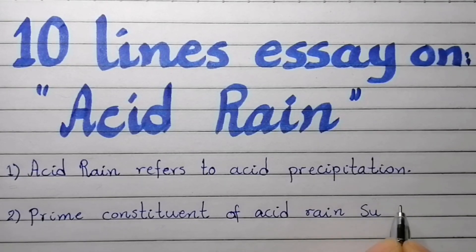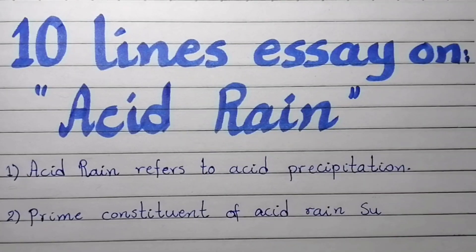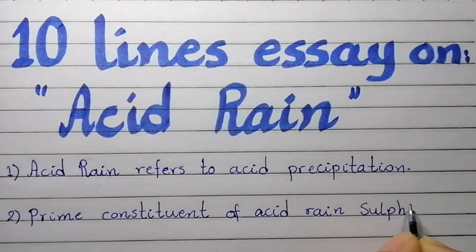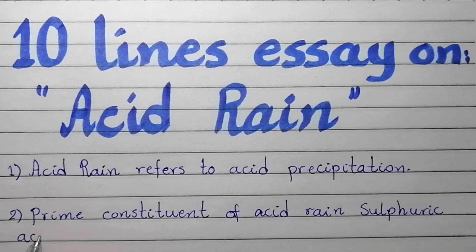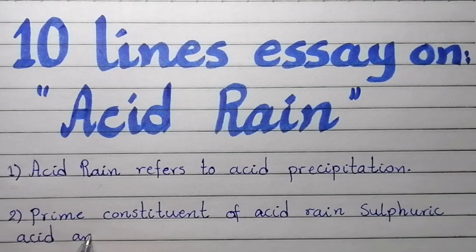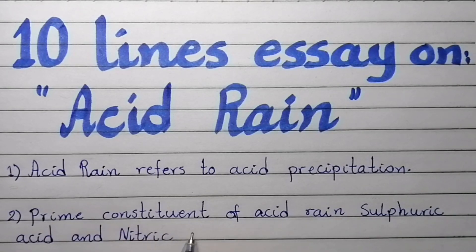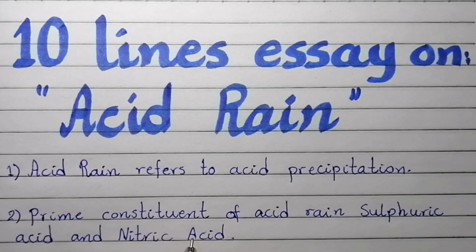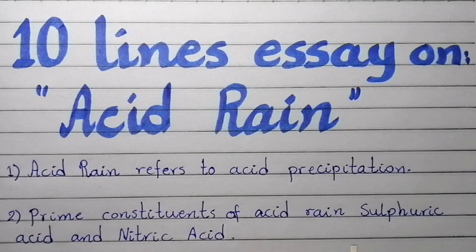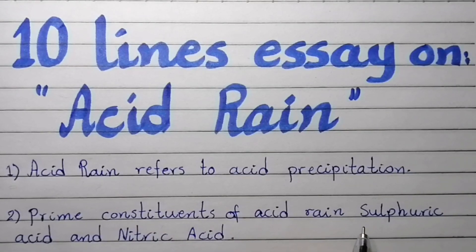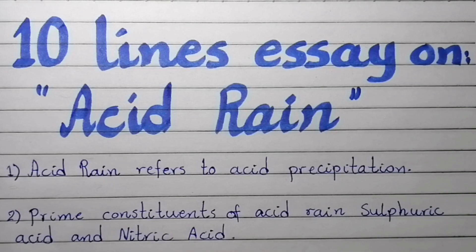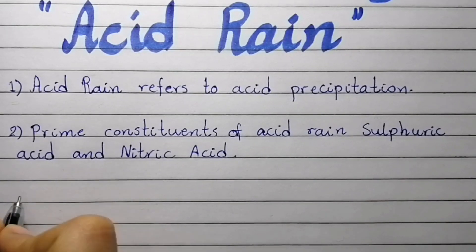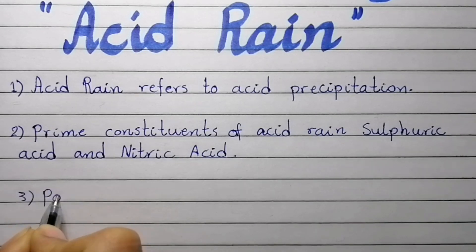Point number two: the prime constituents of acid rain are sulfuric acid and nitric acid.